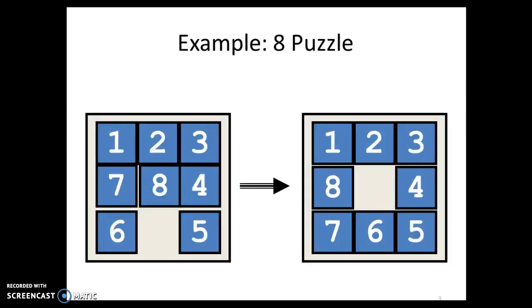So now how do I define a heuristic function? Consider the example of an 8 puzzle. This is my goal state. So I want 1, 2, 3, 4, 5, 6, 7, 8 in this particular order.